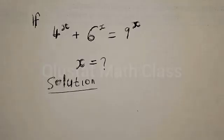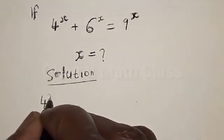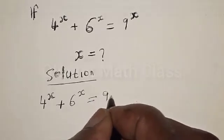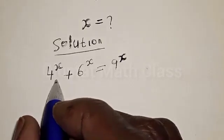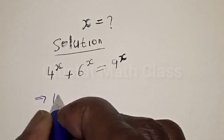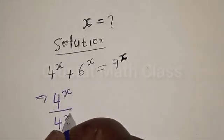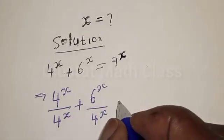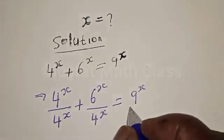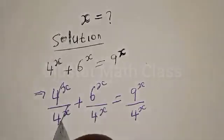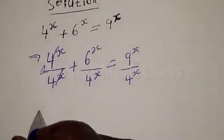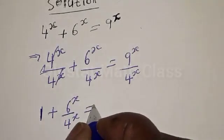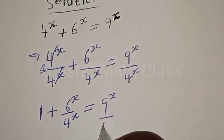Solution. We have 4 raised to power x plus 6 raised to power x equal to 9 raised to power x. Let's divide all through by 4 raised to power x. Then we have 4 raised to power x divided by 4 raised to power x, plus 6 raised to power x divided by 4 raised to power x, equal to 9 raised to power x divided by 4 raised to power x. This first term cancels to give 1.